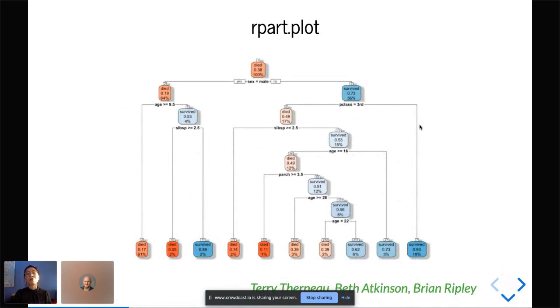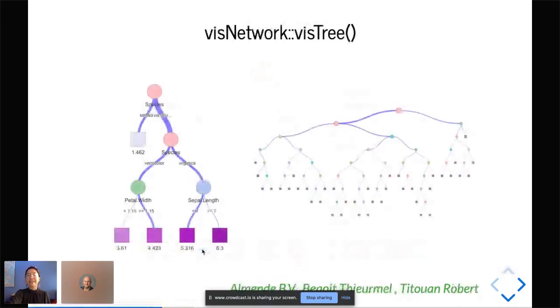Before we go into what TreeHeatr actually does, let me walk you through a few tools and tool sets that we currently have in R for drawing decision trees. First is rpart.plot. You probably saw this earlier in Daniela Witten's talk, where she showed this decision tree where at the node you have the condition. If your sample satisfied this condition, you go to the left, if not, you go to the right. Eventually you arrive at the terminal node or leaf node, where there's a label for your sample and the shading shows how confident the model is at predicting that label.